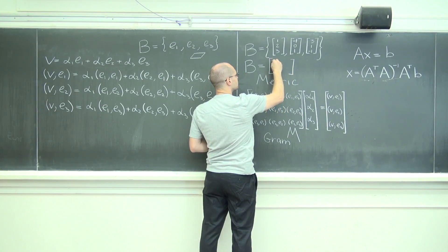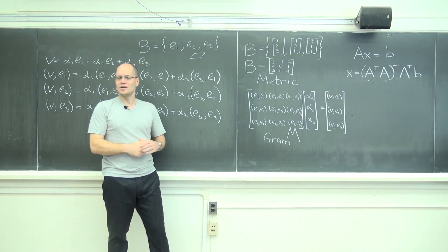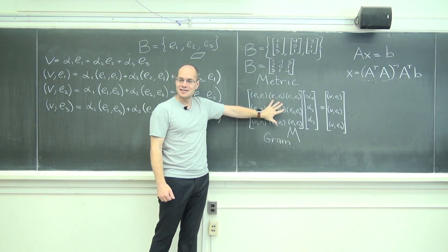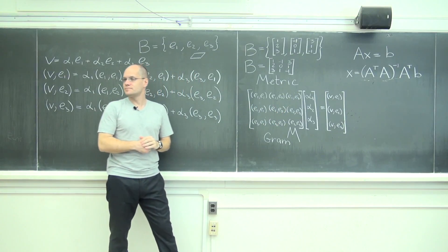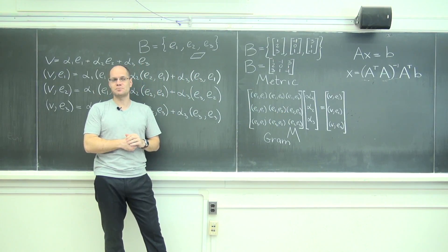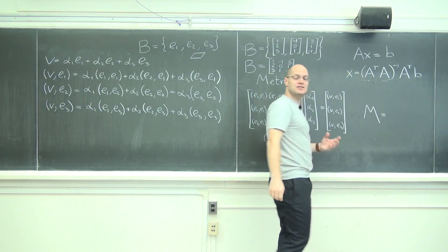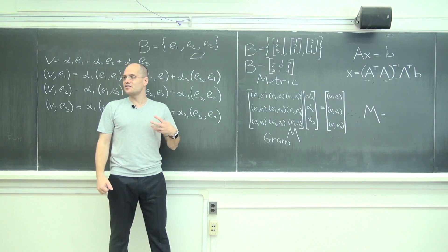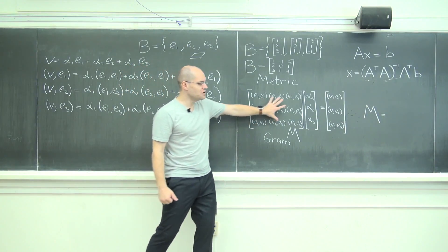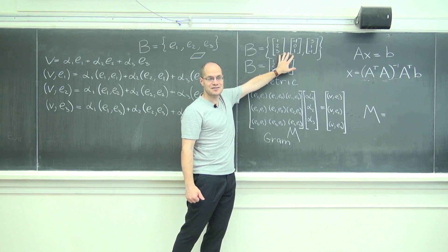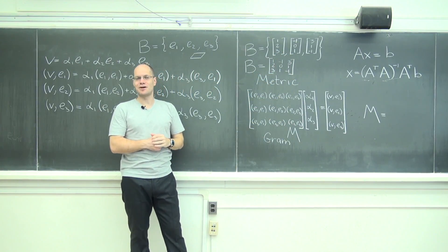So suppose I captured this basis by putting it into a 3 by 3 matrix. Using this matrix B, could you express the matrix M? And if you could, what is that expression in terms of B in a matrix product, so that the result is a 3 by 3 matrix full of these pairwise inner products of these vectors with respect to the standard inner product?